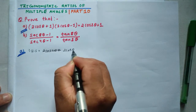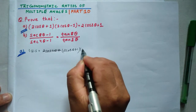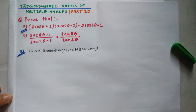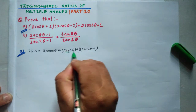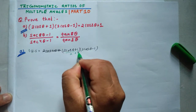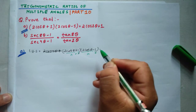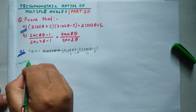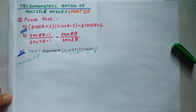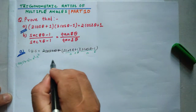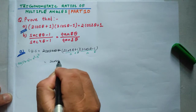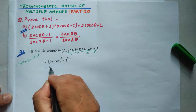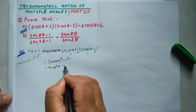Using the identity (a + b)(a - b) = a² - b², we get (2cosθ)² - 1² = 4cos²θ - 1.